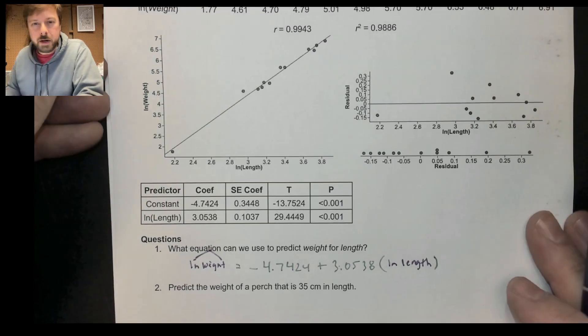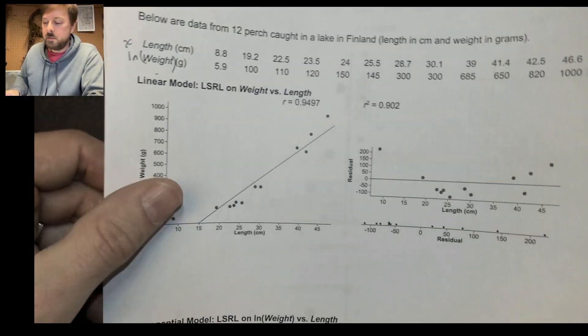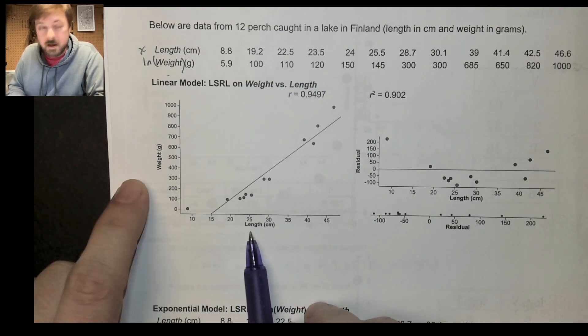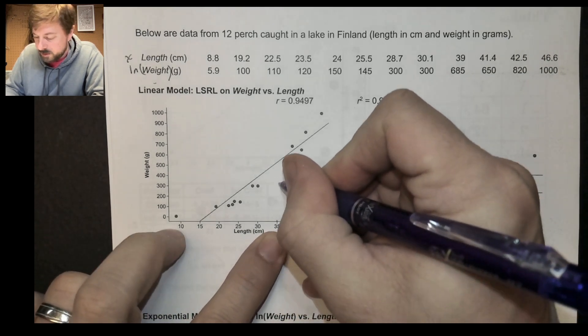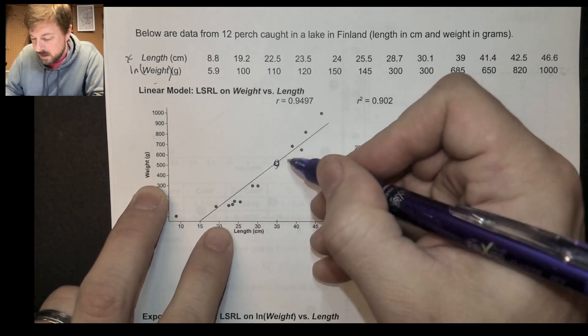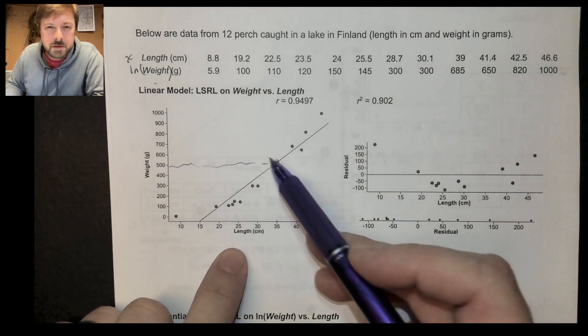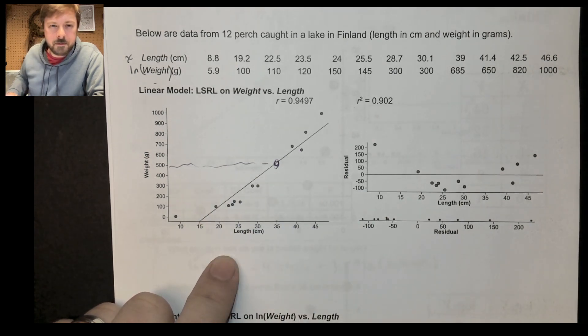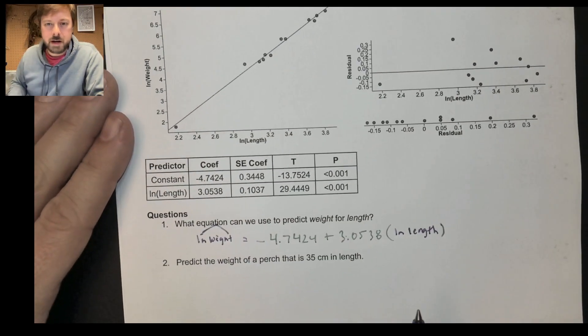So let's predict the weight of a perch that is 35 centimeters in length. To get an intuition for that, notice this is all natural log of lengths. 35 is nowhere down there, but if we're going to get an intuition, let's take a look at our initial scatter plot with no logs. I see 35 right here. I'm guessing it might be somewhere around here, maybe around like 500 or so grams. Well, let's use this equation to figure it out.